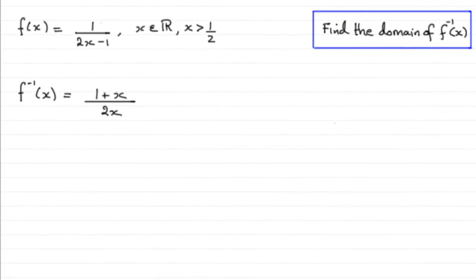Now for this part of the question we've got to find the domain of the inverse function of f(x). We found out earlier that f(x) was 1 over 2x minus 1, where x was any real number that was greater than a half. And we've also found that the inverse function of f(x) was 1 plus x over 2x.